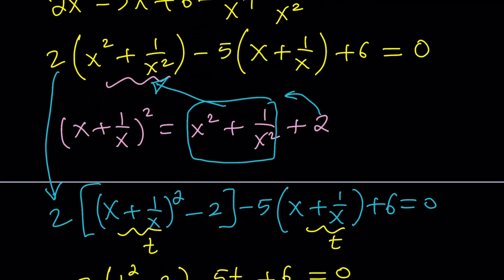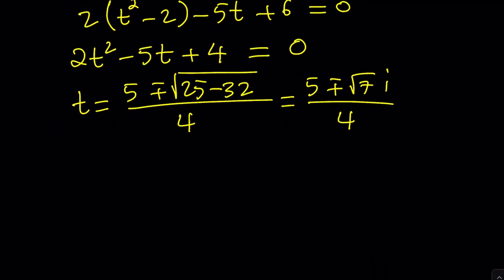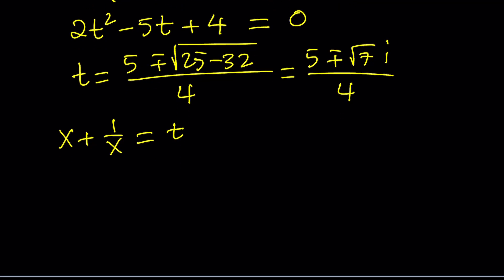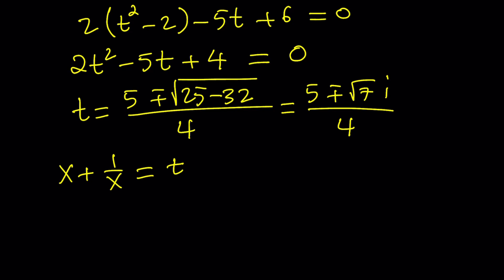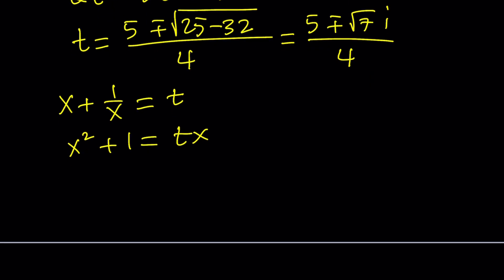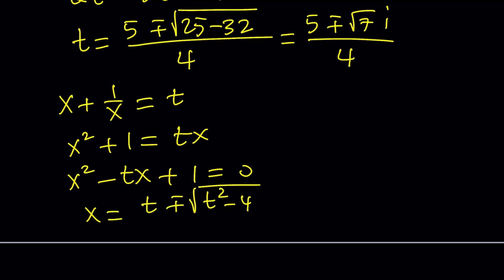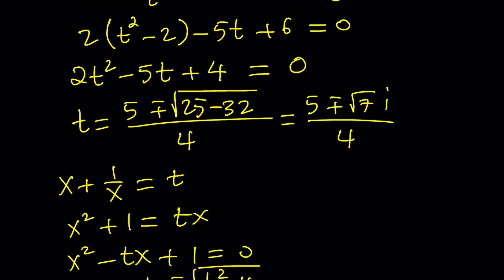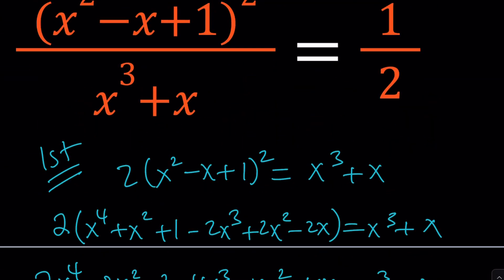Since t equals x plus 1 over x, we set it equal to those values and find the x values. We can solve the generic equation by multiplying everything by x, putting everything on the same side, and using the quadratic formula: negative b plus or minus the square root of b squared minus 4ac, divided by 2, then replacing t with its values. Since there are two t values, each gives two x solutions, for a total of four — which makes sense for a quartic equation.